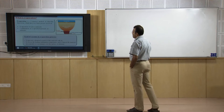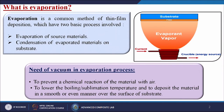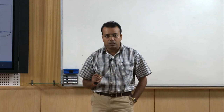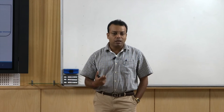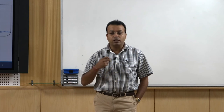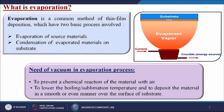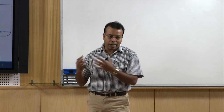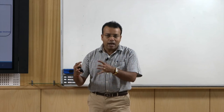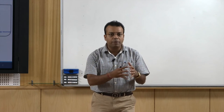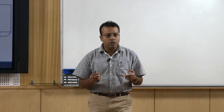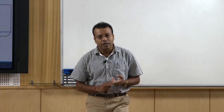Evaporation is a common method of thin film deposition which has two basic processes involved. First is the evaporation of the source materials — whatever target materials we are going to coat onto a substrate. The second is the condensation of evaporated materials on the substrate. First we are agitating the target materials so that ions or molecules come from the target materials and then nucleation or growth occurs on the substrate materials.